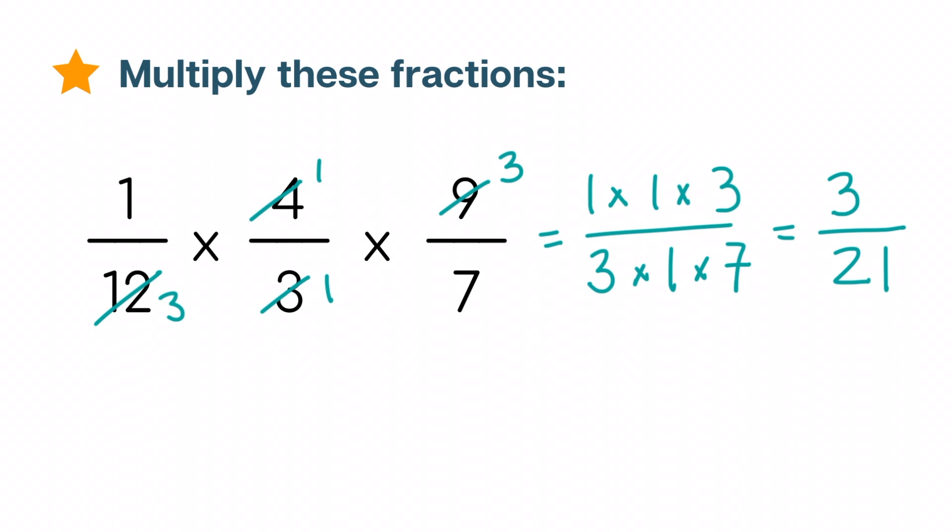Now, we can actually simplify even further because both numbers are divisible by 3. And we'll get 1 over 7 as our final answer.